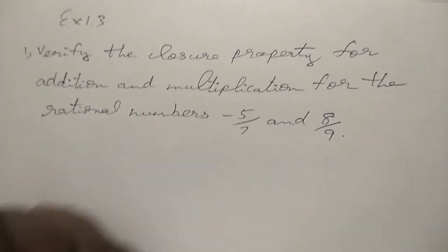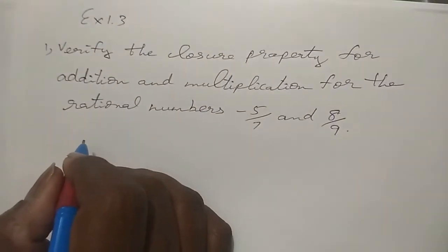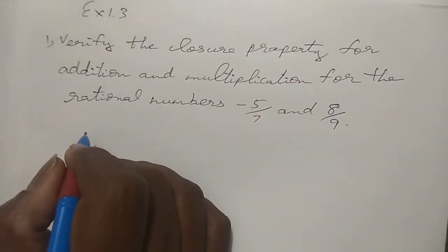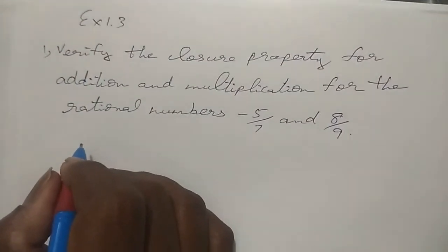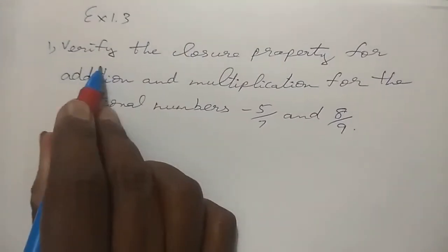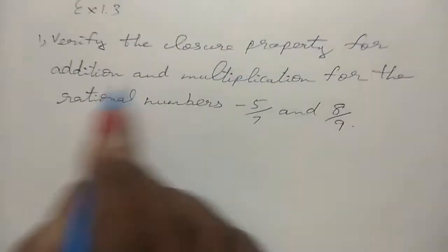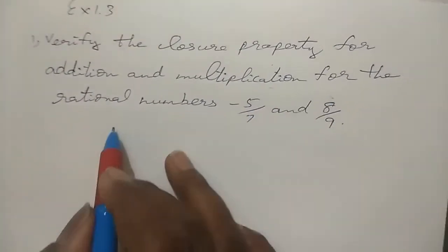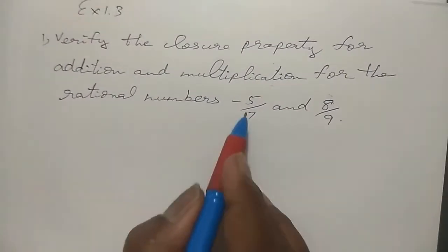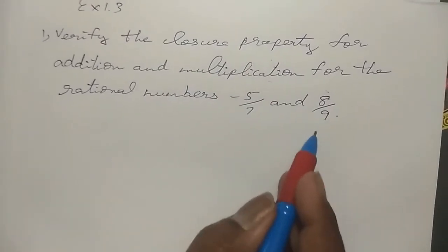Hello, this is John here. Today we will see about Exercise 1.3, the first sum. Verify the closure property for addition and multiplication for the rational numbers minus 5 by 7 and 8 by 9.